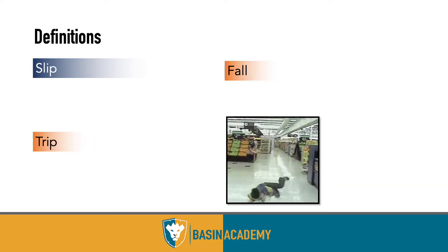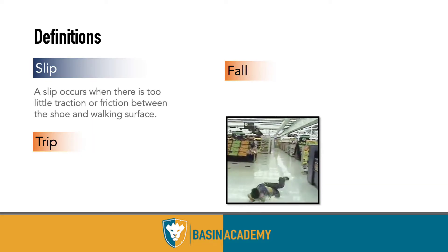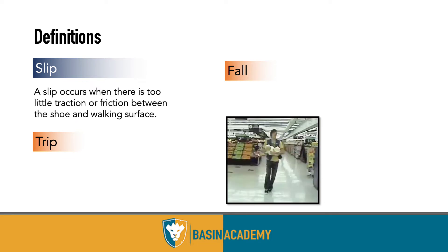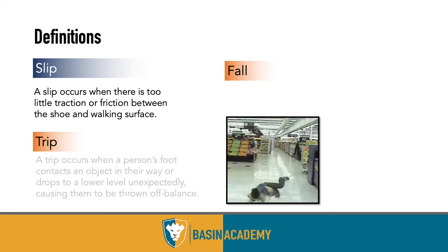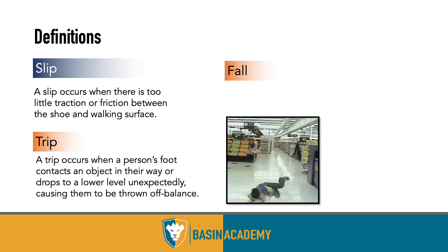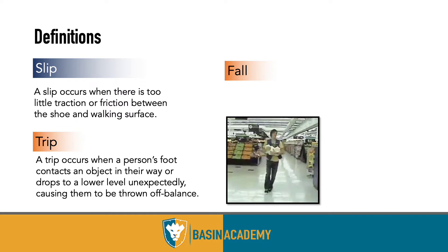Defining slips, trips, and falls: a slip occurs when there is too little traction or friction between the shoe and the walking surface, causing a slide. A trip occurs when there's an obstacle in a person's path — sometimes their own foot — or a change in grade or elevation that throws them off balance.